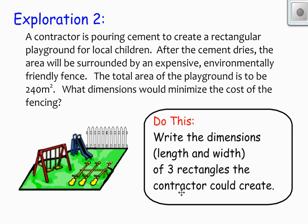Here's another question, and we're going to go through this one a little faster. A contractor is pouring cement to create a rectangular playground for local children. After the cement dries, the area will be surrounded by an expensive, environmentally friendly fence. See, I told you about the fencing. The total area of the playground is to be 240 meters squared. What dimensions would minimize the cost of the fencing? So again, look at what we know. We know this time that the area has to be 240 meters squared.